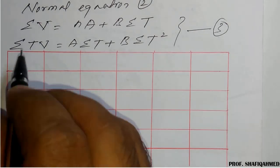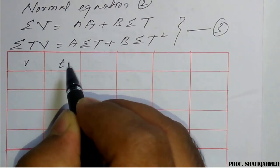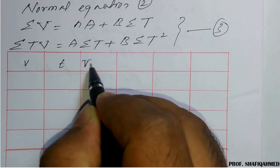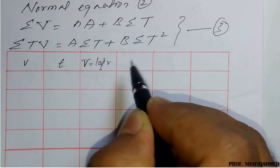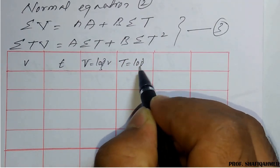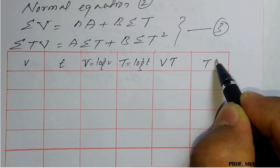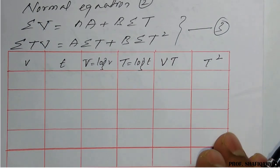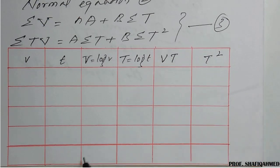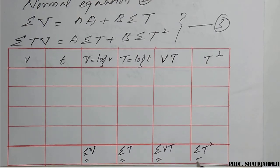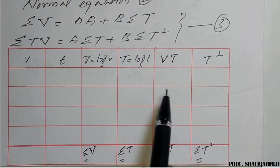We now prepare the table with columns: small v, small t, capital V = log(v), capital T = log(t), V·T, and T². The summations needed are: summation of V, summation of T, summation of VT, and summation of T².